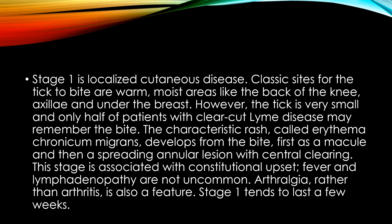Classic sites for the tick to bite are warm, moist areas like the back of the knee, axilla, and under the breast. However, the tick is very small and only half of the patients with clear-cut Lyme disease may remember the bite because it is a very small insect. The characteristic rash called erythema chronicum migrans develops from the bite, first as a macule and then spreading as an annular lesion with central clearing. This stage is associated with constitutional upset such as fever and lymphadenopathy.